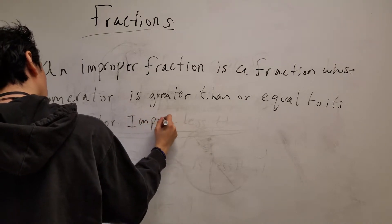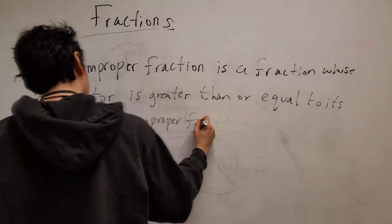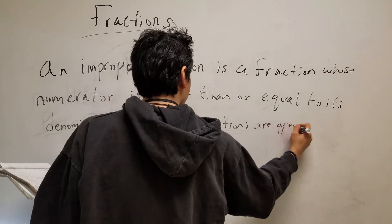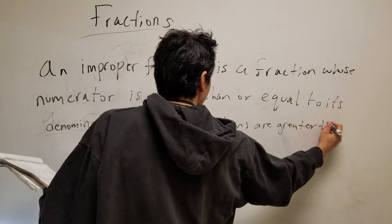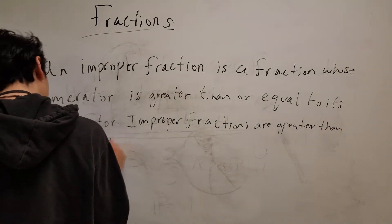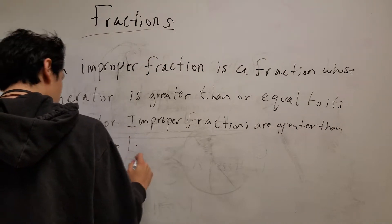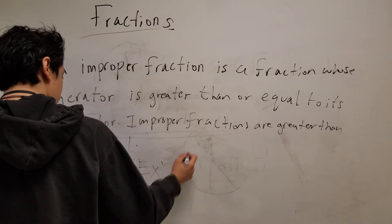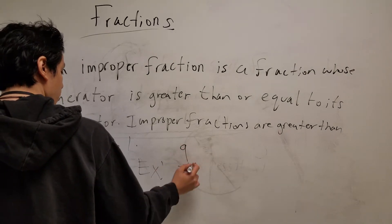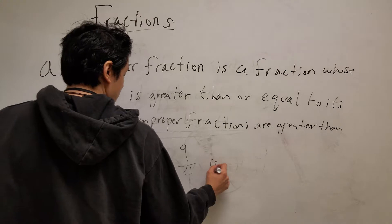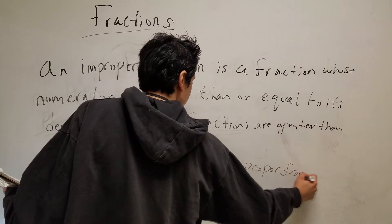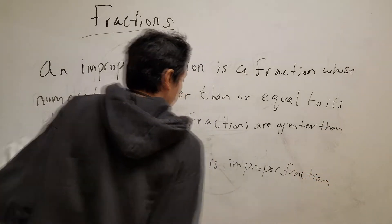So in short, improper fractions are greater than or equal to 1. Let's take 9 over 4 - that's an improper fraction.